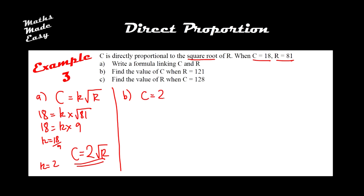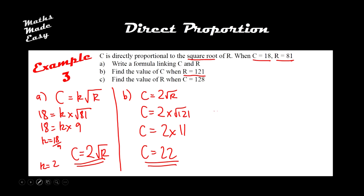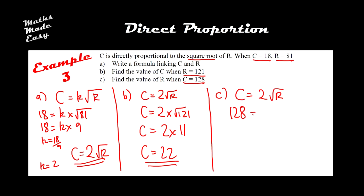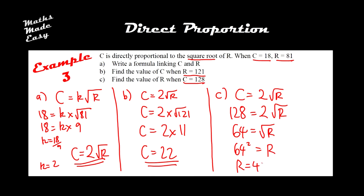For part B, write C equals 2 times square root of R and substitute R as 121: C equals 2 times square root of 121, which is 11, so C equals 22. For part C, C is 128: 128 equals 2 times square root of R. Divide by 2 to get 64 equals square root of R. To get rid of the square root, square both sides: R equals 64 squared, which gives R equals 4096.